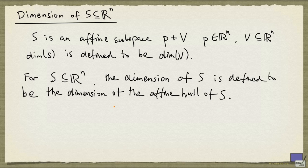So from this definition, we can see that the dimension of a line segment will be 1, because the affine hull of a line segment is simply a line. And the same is true for just two points. The affine hull of two points is a line, and so the dimension of a two-point set is going to be 1 as well.